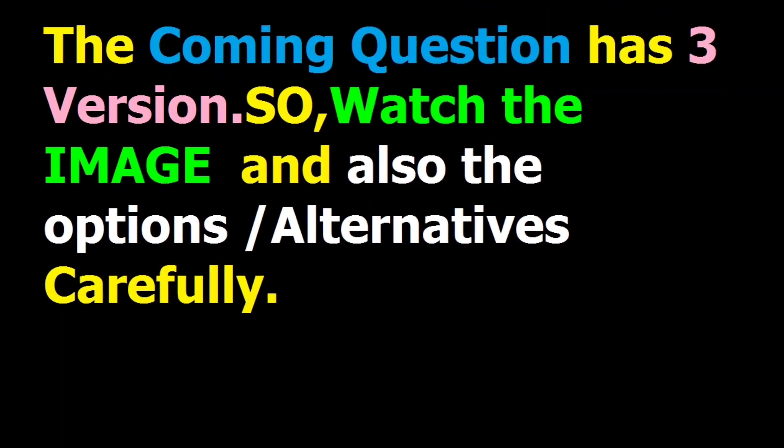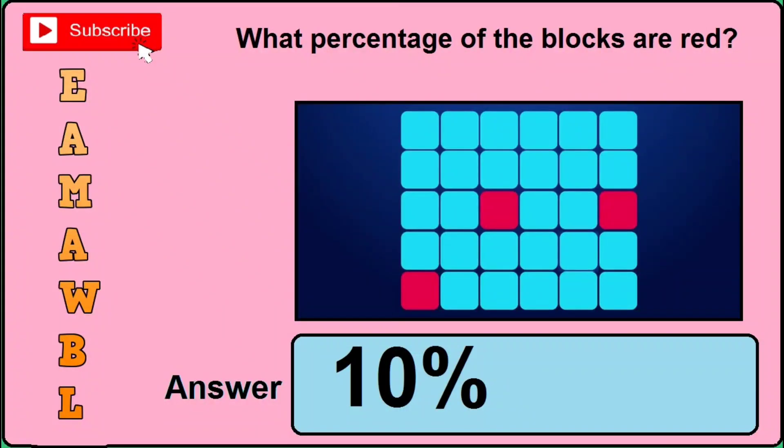This coming question has got three different versions, so you need to watch the image and just click the answer I will be showing. For example, in version 1 of this question, watch the image and if you find this set of same-to-same image, the correct answer will be 10 percent — so you need to click 10 percent if you find this set of image.